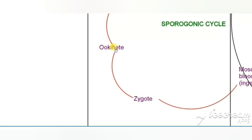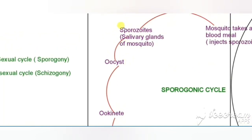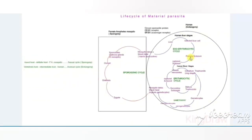The zygote will be converted to an ookinete, which is an elongated form, and will multiply and penetrate the midgut wall, reaching the body cavity. In the body cavity, the ookinete is converted to an oocyst. The oocyst will mature and release around 10,000 sporozoites. These sporozoites will reach the salivary glands and now the mosquito will become infective. When the mosquito bites another susceptible individual, it transmits the infection and completes the life cycle of the malarial parasite.